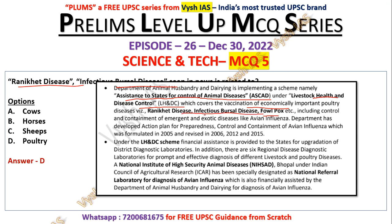When studying a scheme, read the inside details — that's where these specifics are mentioned, whether from PIB, PRS, or any source. The scheme also covers control of emergent and exotic diseases like avian influenza, with an action plan formulated in 2005 and revised later. Financial assistance is provided to states for updating diagnostic laboratories. There are six regional disease diagnostic laboratories, and the National Institute of High Security Animal Disease in Bhopal is designated under ICAR as the national referral laboratory for diagnosis of avian influenza.